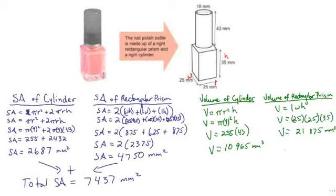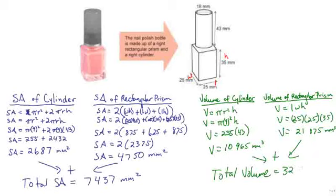The final step, just as we did with the surface area, is to add the volume of the cylinder to the volume of the rectangular prism to get the total volume. Our total volume for this nail polish bottle is 32,840 mm³.